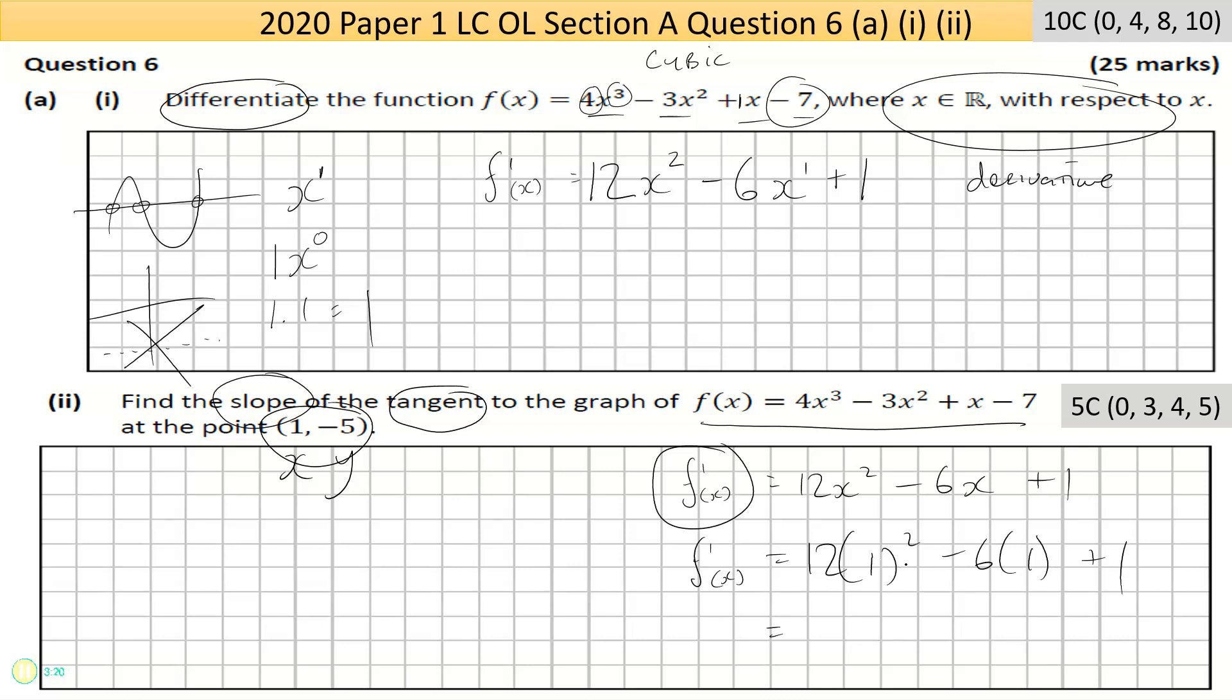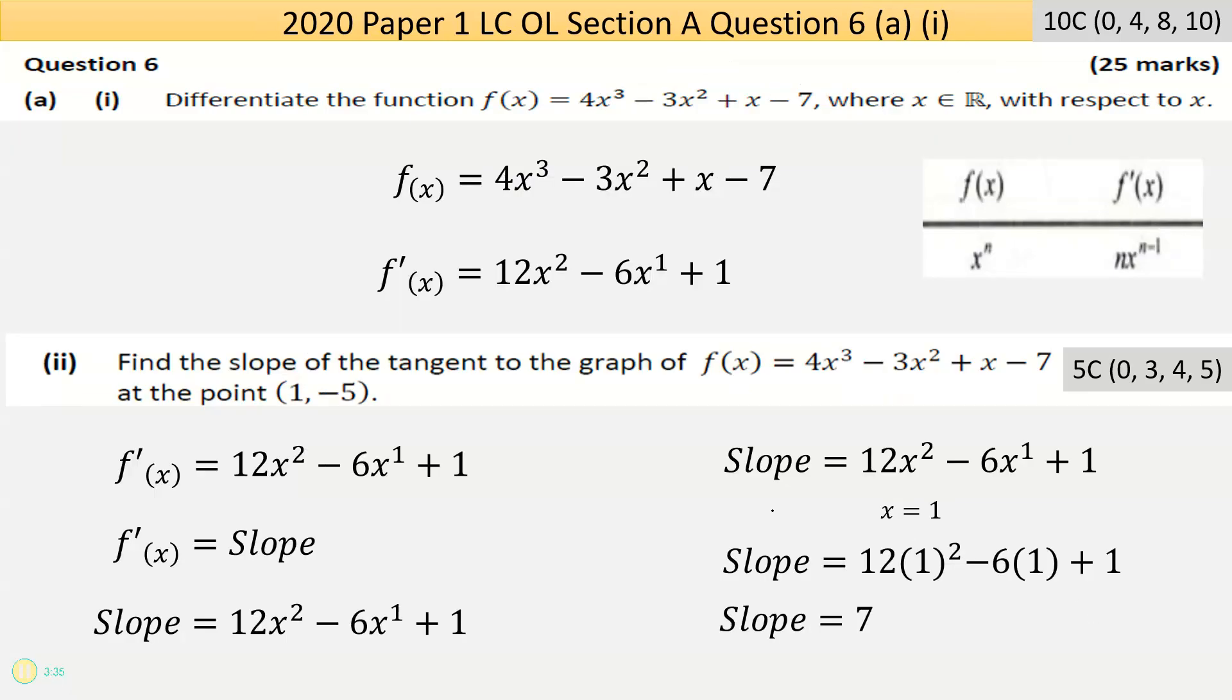Put that through my calculator: 1 × 1 is 1, so 12 - 6 + 1, that's 13 - 6 is 7. So your answer is seven.